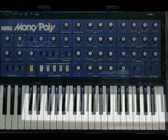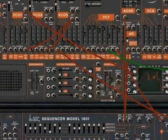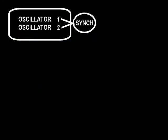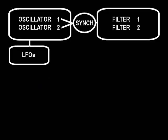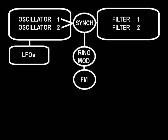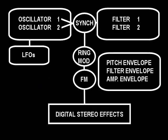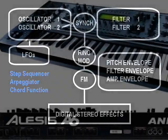Since there is no standard synthesizer arrangement or user interface, we are using the basic voice configuration of a two-oscillator unit that can be syncable, fed through to filters 1 and filters 2. The oscillators can be remodulated, and also frequency modulation can be applied, and also pitch, filter, and amplitude envelopes. The whole sound source is fed through digital stereo effects. The Alesis Andromeda has a step sequencer, arpeggiator, and chord function.